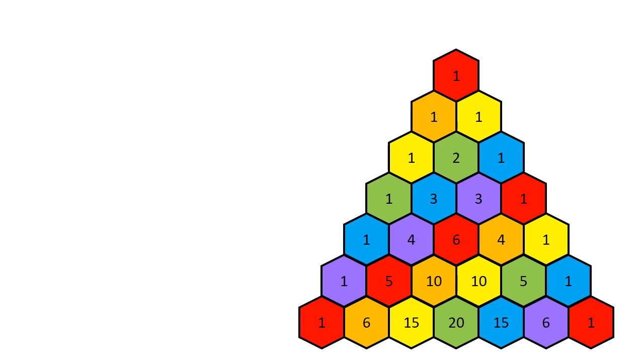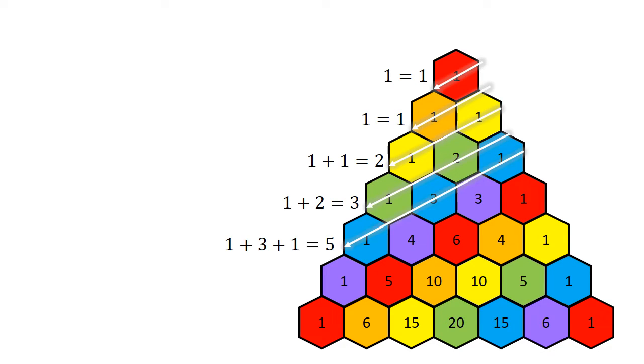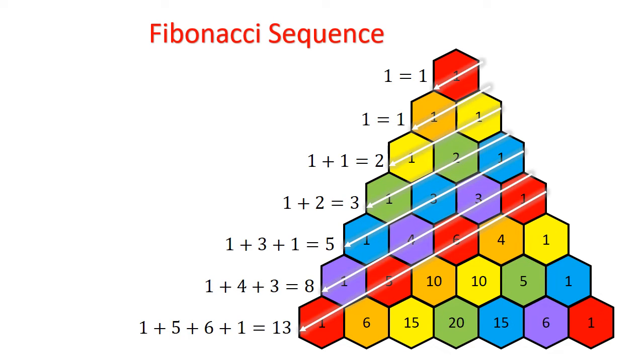If we take the sum along a different diagonal, the first one gets us 1, then 1, then 1 plus 1 is 2, 1 plus 2 is 3, then 5 and 8 and 13. This pattern is the Fibonacci sequence.